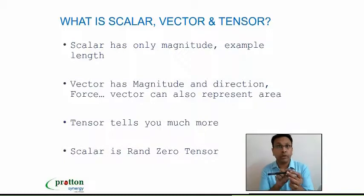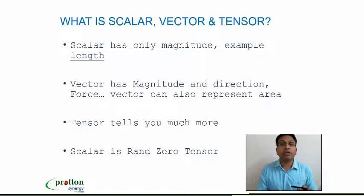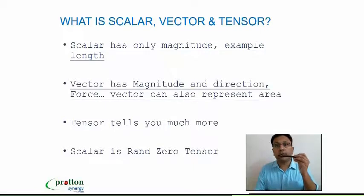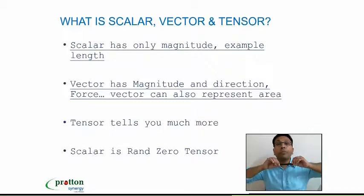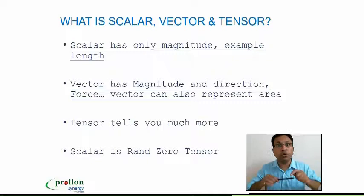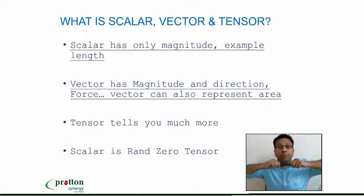Vector has got magnitude as well as directions. It means that if I am applying a force on this object and if I ask you a question whether it is going to elongate or it is going to get compressed, you cannot tell me unless and until I tell you if I am pulling it or I am pushing it. So the direction is also important.